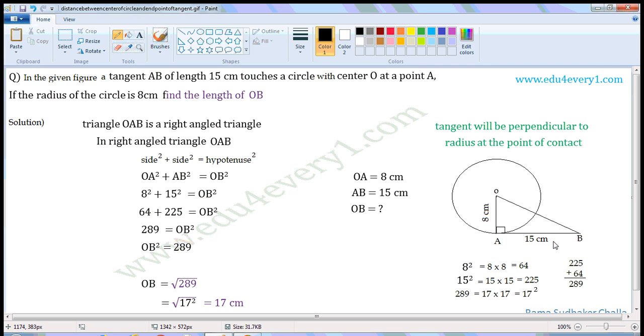As triangle OAB is a right-angled triangle, by Pythagoras theorem, we have side squared plus side squared equals hypotenuse squared. One side is OA, the other side is AB, and OB is the side opposite to the right angle, so OB will be the hypotenuse. So OA² + AB² = OB².